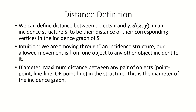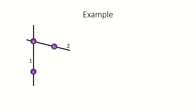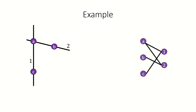As an example, what would be the diameter of this incidence structure? First, find the incidence graph. Then find the diameter of the incidence graph, which in this case is 4. That's the diameter of our incidence structure.